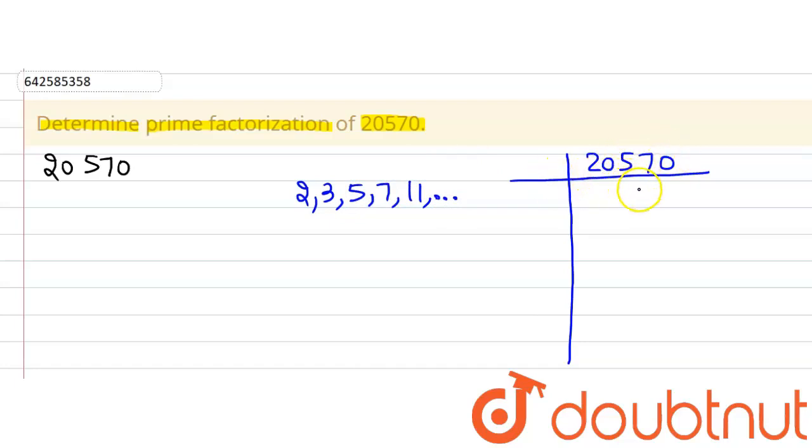Now we know that 20,570 is divisible by 2. So we are going to first divide it by 2 which will give us 10,285.